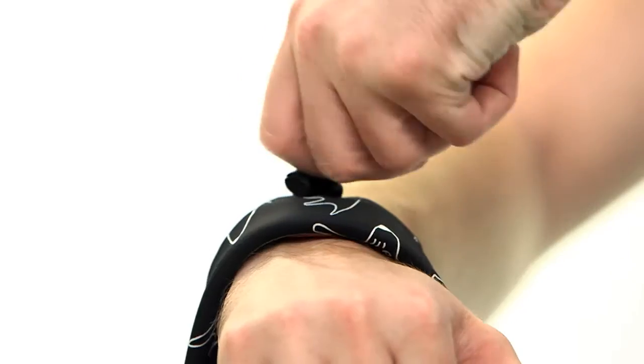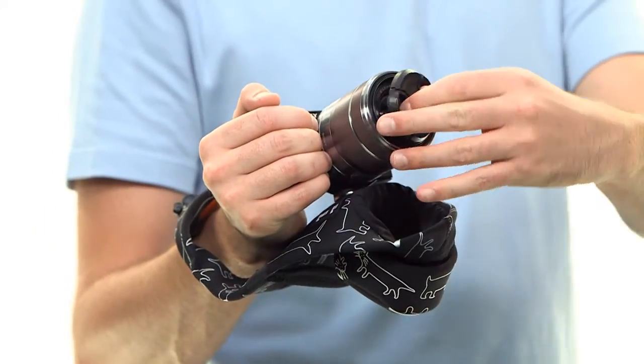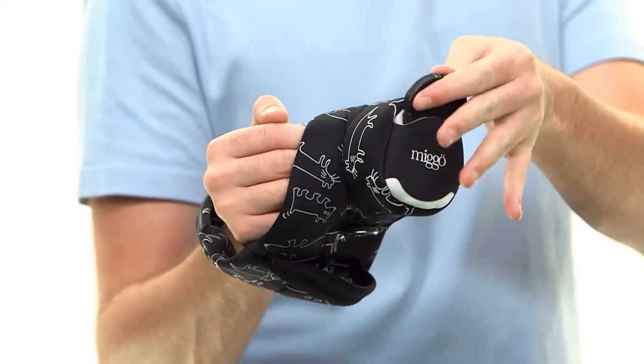If needed, tighten or loosen the loop cord to fit your wrist. Keep the lens cap in a designated pocket so it won't get lost while shooting.